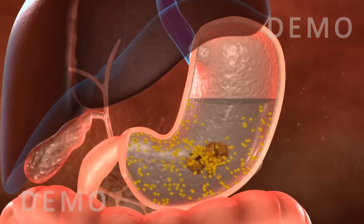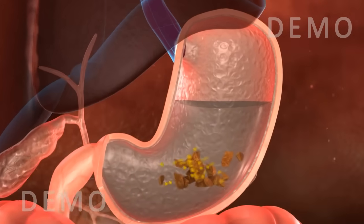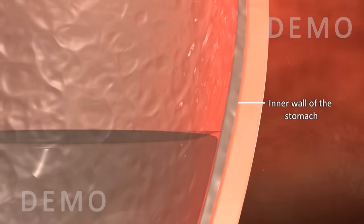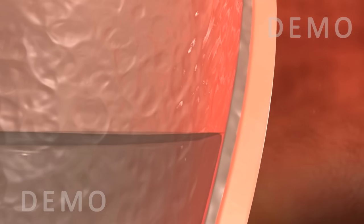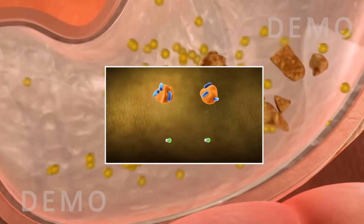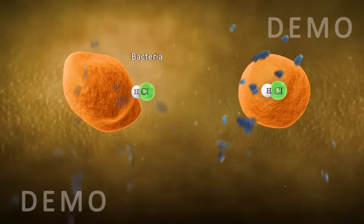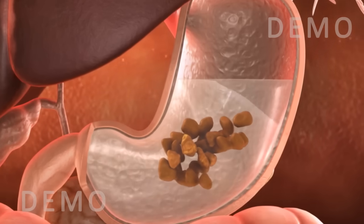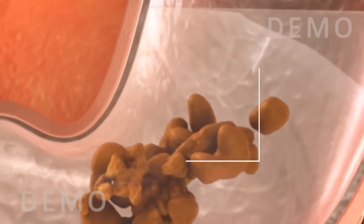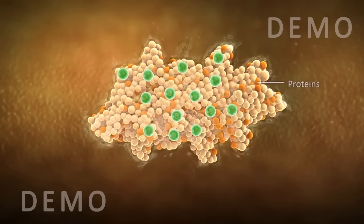The mucus membrane protects the inner wall of the stomach from the effects of the acid. The hydrochloric acid kills the bacteria that enter along with the food, and also helps in the digestion of proteins.